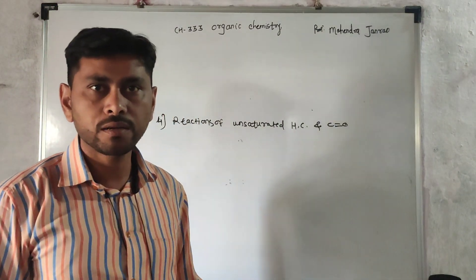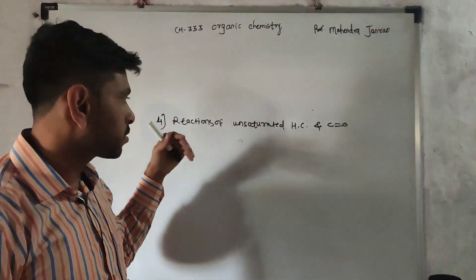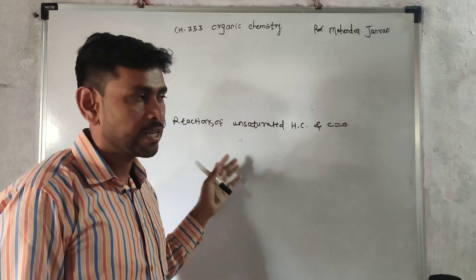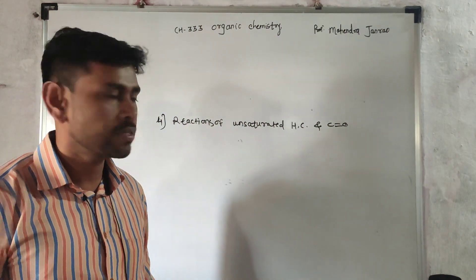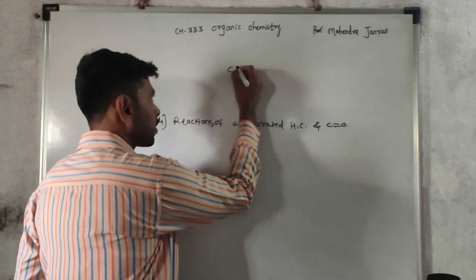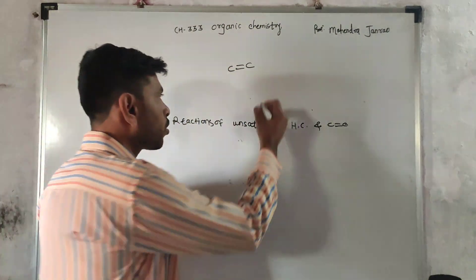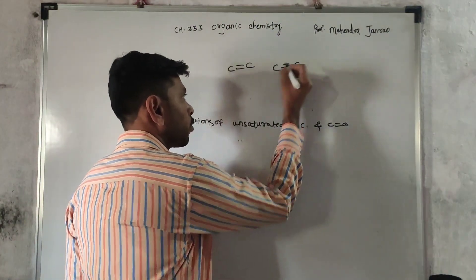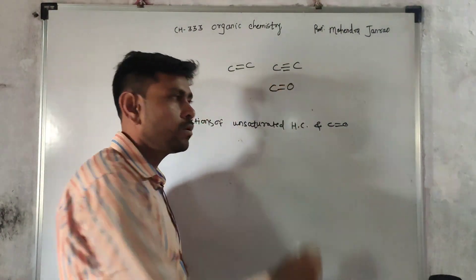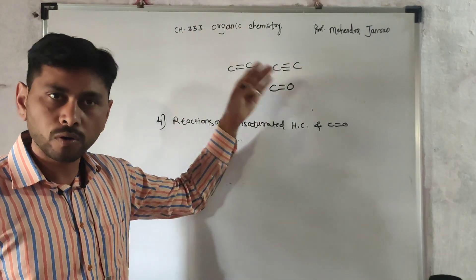We have been learning since class 11 about saturated carbon, aliphatic carbon, aromatic carbons, aromatic systems, aliphatic systems, saturated and unsaturated systems. An unsaturated system simply means carbon-carbon double bond or carbon-carbon triple bond — systems containing either a double bond or a triple bond. Carbon-oxygen double bond is also an unsaturated system. We have to study the reactions of all these systems.